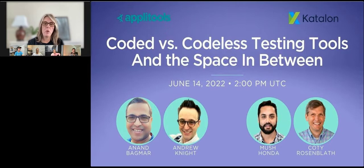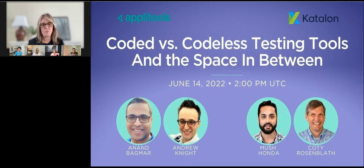I'd like to introduce you today to our panelists. From Applitools, we have Anand Bagmar and Andrew Knight. Anand Bagmar is a software quality evangelist with more than 20 years in the software testing field. He's a contributor to the Selenium project, has built a number of open source tools, and is passionate about shipping a quality product. Andrew Knight is the Automation Panda — an engineer, consultant, and international speaker who builds solutions for software testing problems. He's designed robust test automation projects for web apps, service APIs, and operating systems. He's also the lead developer for BOA Constrictor, the .NET screenplay pattern.